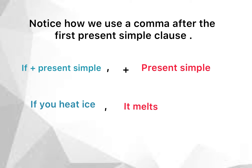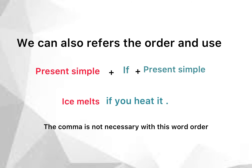The second note: how do we use a comma? If the if clause comes first — 'if' plus simple present — we use a comma after the if clause, then we put the simple present in the main clause. For example: 'if you heat ice, it melts.' We can also reverse the order and put the main clause first, then the if clause — like 'ice melts if you heat it.' The comma is not necessary with this word order.